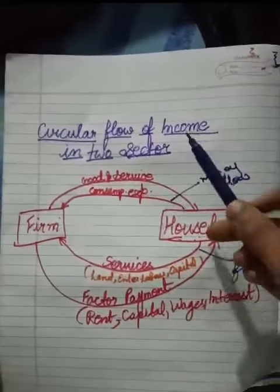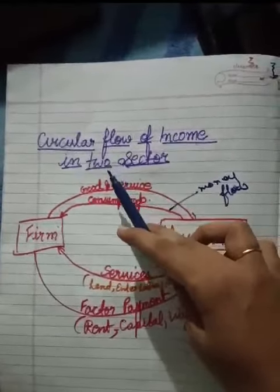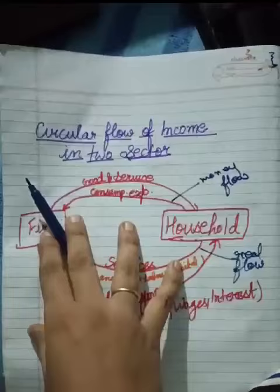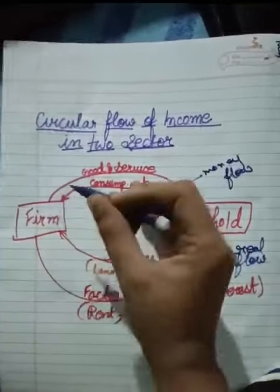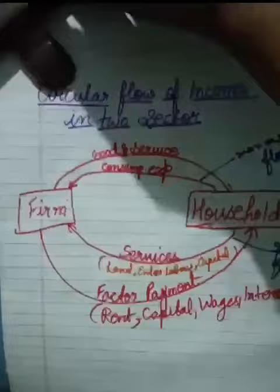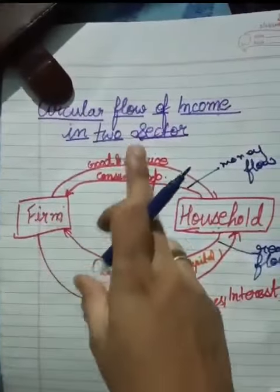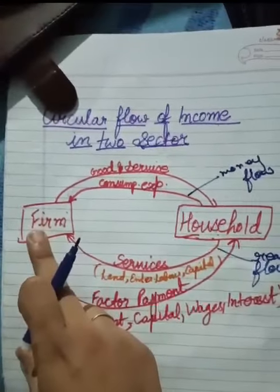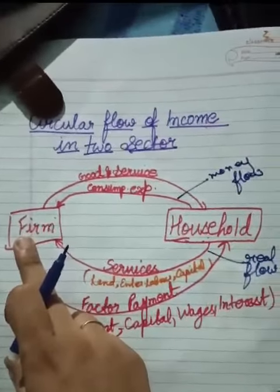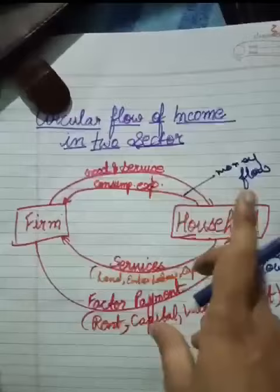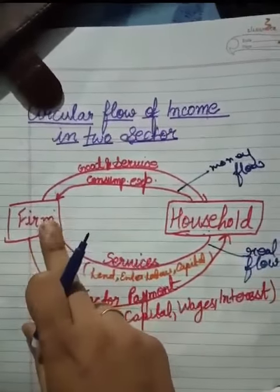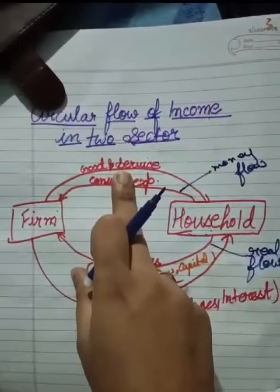Welcome to my class. Today we are going to cover the circular flow of income in two sectors — money flow between two sectors. We have two sectors: firm and household. Firm here denotes big industrial industries, and households represent consumers. Firm produces goods and services.